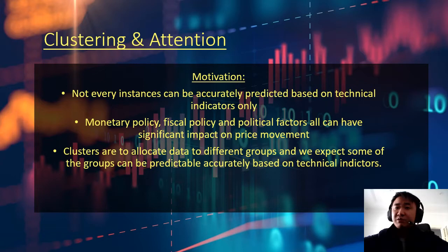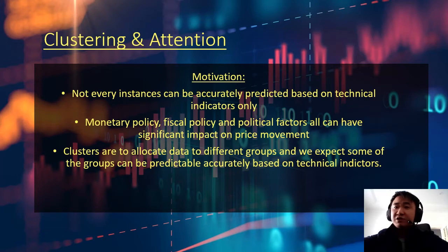Things such as monetary policy, fiscal policy, and political factors can all have a huge impact on price movements. For example, if the RBA decides to lower or increase the interest rate, or if the government pushes out a huge stimulus package, or if a trade war starts between two nations, they can all have a very significant impact on price movements in either the short term or long term.